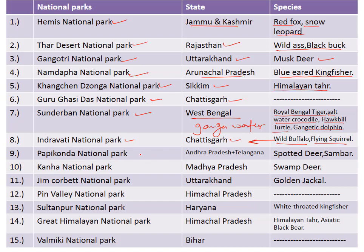Next is Papikonda National Park, situated on the border of Andhra Pradesh and Telangana, famous for the spotted deer and sambar. Papikonda National Park is also famous for sandalwood. Next is Kanha National Park in Madhya Pradesh, famous for the swamp deer.